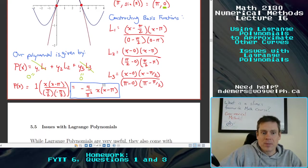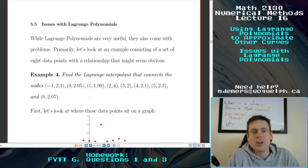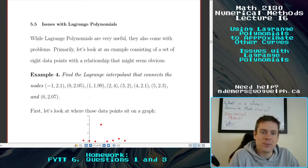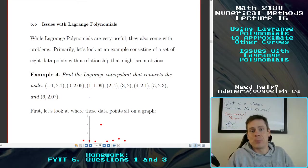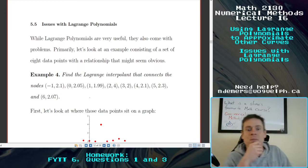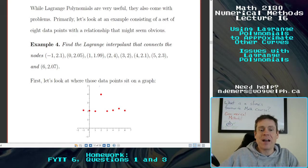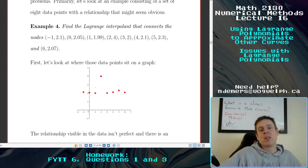So seems really good. And yet the next section we're going to talk a little bit about issues with Lagrange polynomials. Lagrange polynomials can be really useful for understanding polynomials as a numerical method, but it does also come with problems. I'd like you to take a look at an example consisting of a set of eight data points and a relationship that might seem pretty obvious. I've got eight points. I chose these and I ran code to find an interpolant for this.